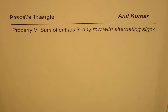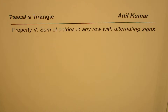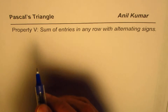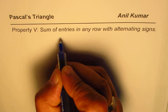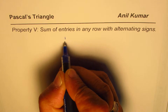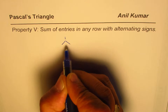I'm Anil Kumar and in this video we'll discuss property five of Pascal's triangle, which is related with the sum of entries in any row with alternating signs.